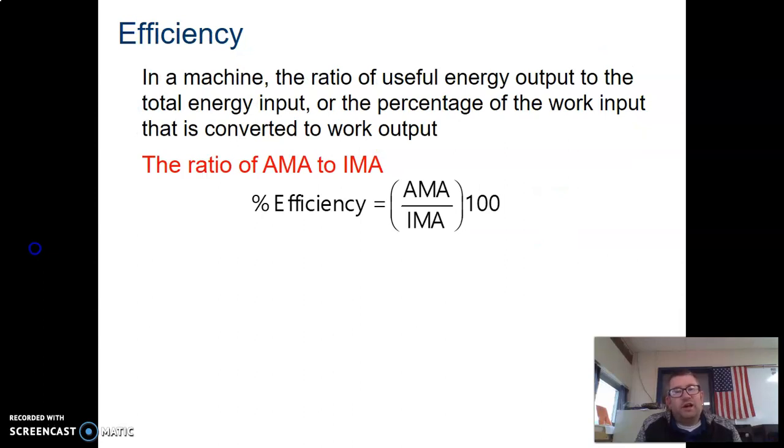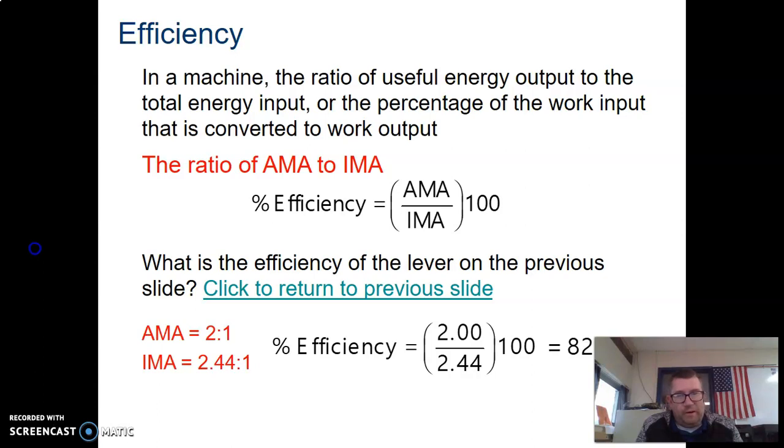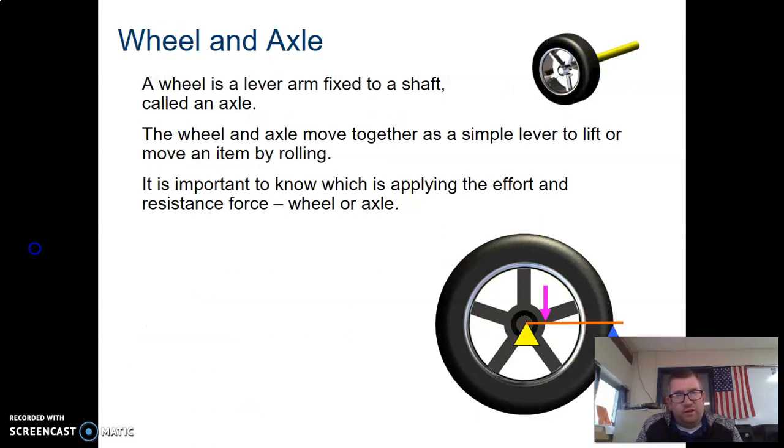Efficiency AMA divided by IMA times 100. Nothing is ever 100 percent efficient due to friction and also some outside forces. In this case the efficiency would be 82 percent.